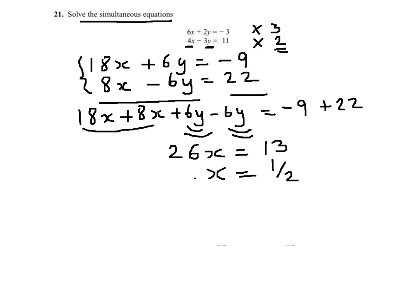Now what I will do is I will substitute the value of x equals half in any of the equations in order for me to work out the value of y. So if I substitute it into equation 1, I will get 6 times x, which is 1 over 2, plus 2y equals minus 3.